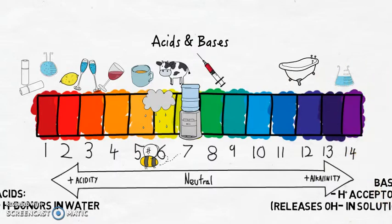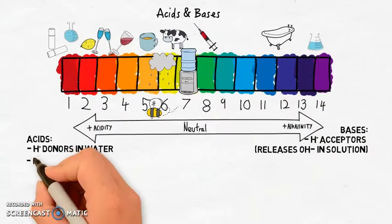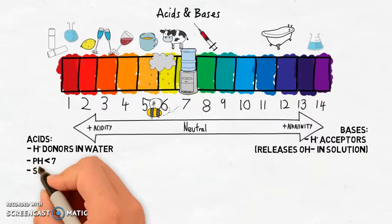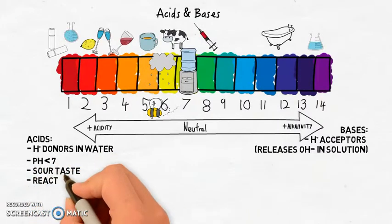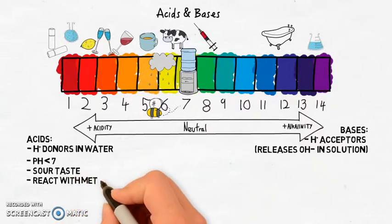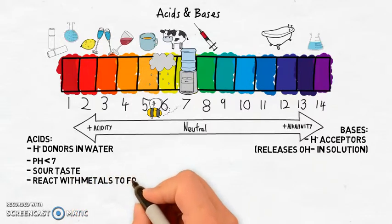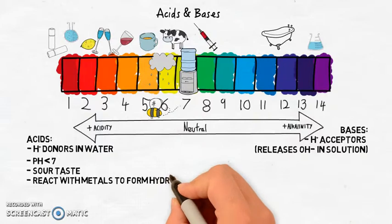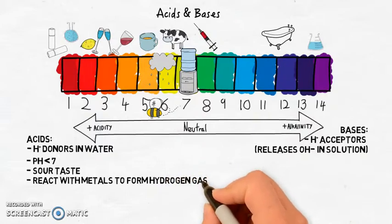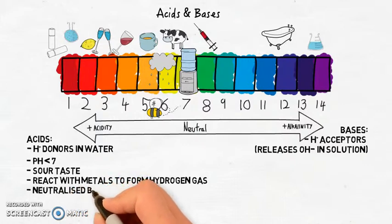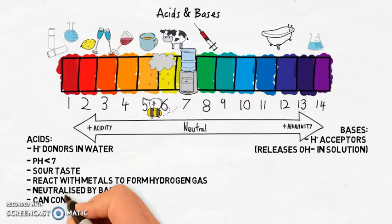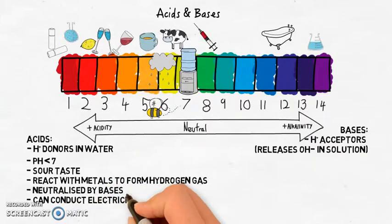Substances that we use in the lab that are classified as basic include sodium hydroxide, which has a pH around 14. Properties of acids include: they have a pH below 7, they have a sour taste like lemon, they react with metals to form hydrogen gas, they are neutralized by bases—neutralized means to be made neutral, so to bring the pH back to around 7 we need to add a base to the acid—and they can conduct electricity in solution because of the ions.